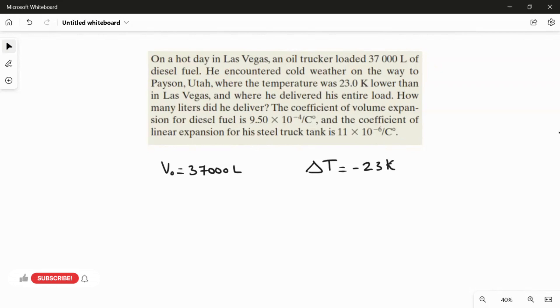The volume of the diesel fuel depends directly on the temperature. If the temperature decreased, the volume of the fuel also decreased because they have a direct relation. If the temperature decreases, there will be some wastage of the diesel fuel. So ΔT is minus 23 Kelvin.